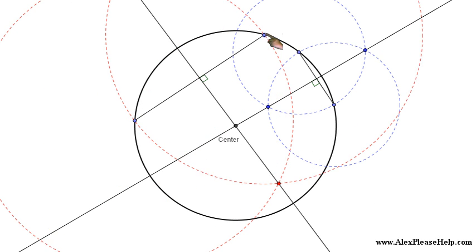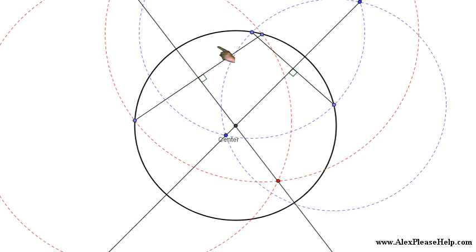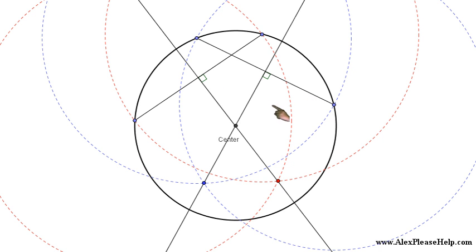And it doesn't matter where these lines are, you can have these points over here and right here. The perpendicular bisectors of the chords will intersect at the center of the circle.